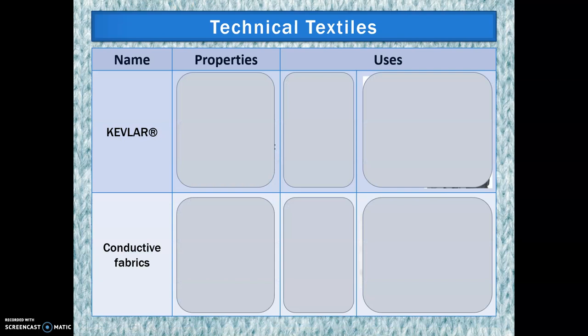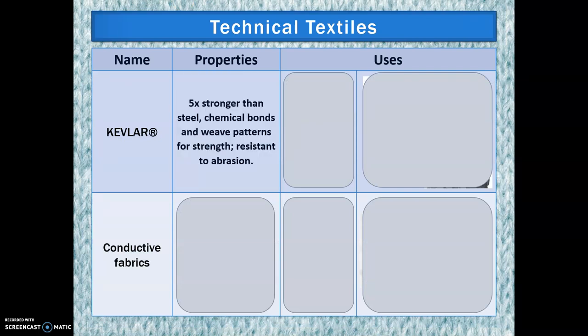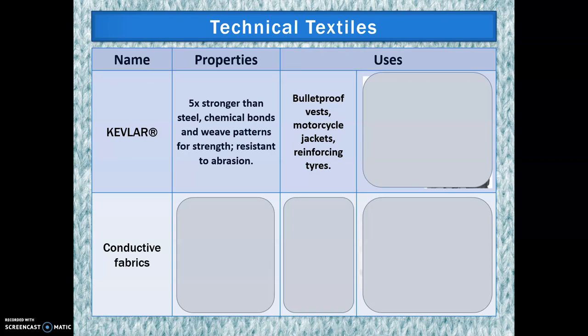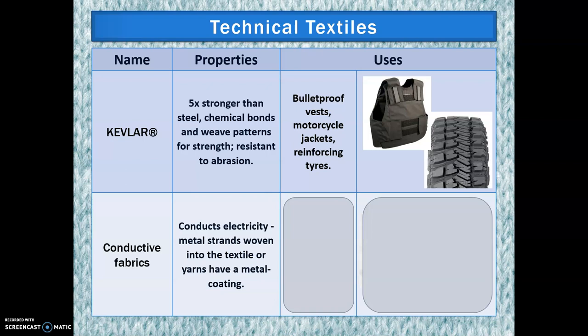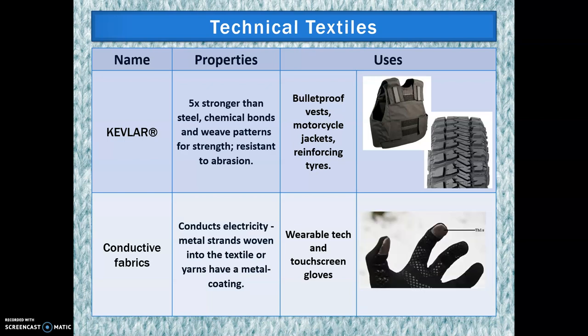The last ones to know are technical textiles — these are really cool. First is Kevlar, which is five times stronger than steel. The chemical bonds and weave patterns increase its strength and it's very resistant to abrasion. It's used for bulletproof vests, motorcycle jackets, and even for reinforcing tyres. Then we have conductive fabrics, which conduct electricity. Metal strands are woven through the textile or there's a metal coating on top, used for wearable tech and touchscreen gloves — you may even have a pair at home.